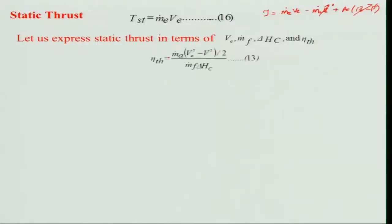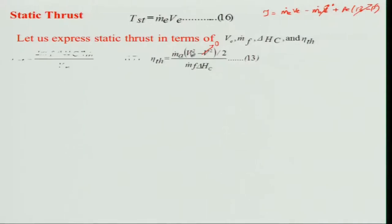Looking at the expression for thermal efficiency — already derived assuming fully expanded nozzle — the pressure term is zero. With flight velocity zero for static thrust, we get static thrust = ṁ_e · V_e = 2 · ṁ_f · ΔQ_c · η_thermal / V_e. For a particular fuel flow rate, fuel type (e.g., aviation turbine fuel), and constant efficiency, static thrust is inversely proportional to the jet exit velocity.